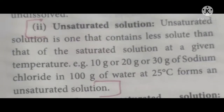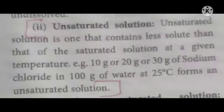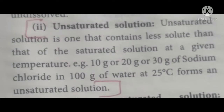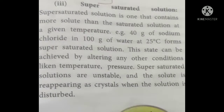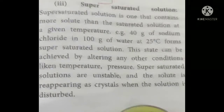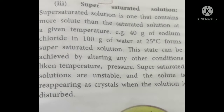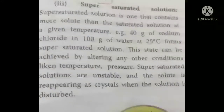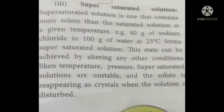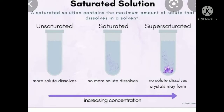An unsaturated solution contains less solute than its saturation point. Supersaturated means: 100 ml of water can normally dissolve only 36 grams, but when you add more than 36 grams — for example by heating — it can dissolve 40 grams. But after cooling, the extra 4 grams is found undissolved. Such a solution contains more solute than its saturated point and is called a supersaturated solution. Based on the amount of solute, the three classifications are: saturated solution, unsaturated solution, and supersaturated solution.